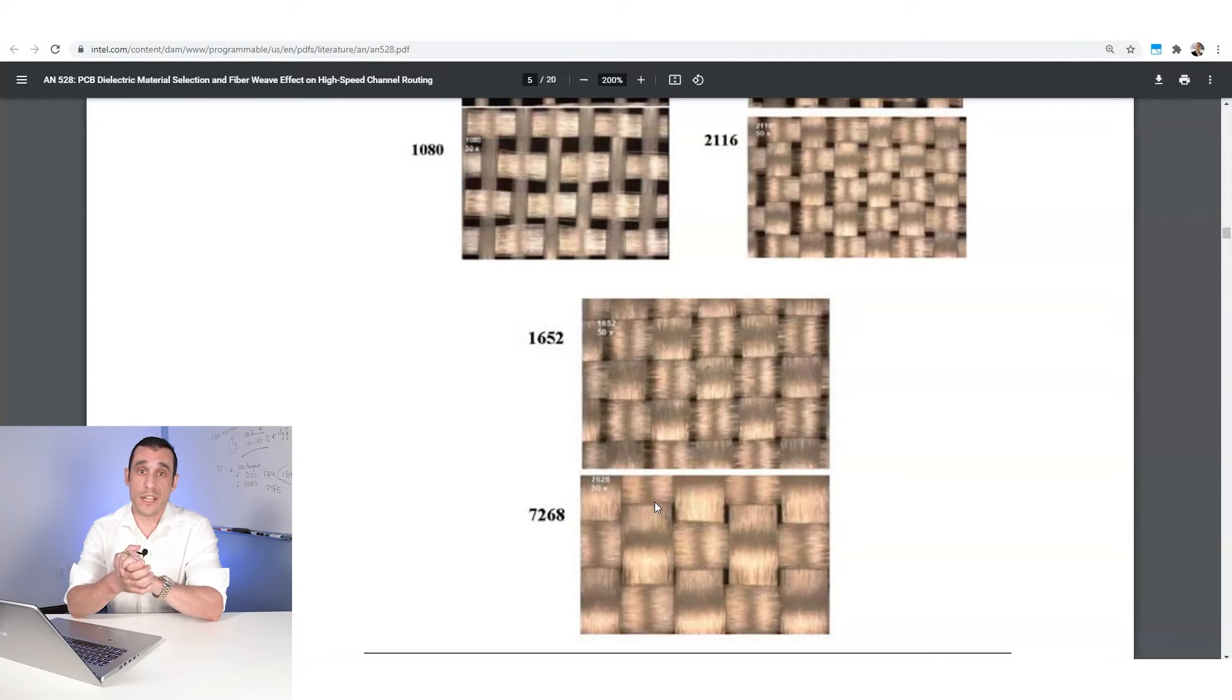So in general, this tighter weave is going to be much better, much more ideal selection for a high speed design or for a high frequency design. So something that's running in the gigahertz range, something that's running, if it's digital below five nanosecond rise time, in general, you want to go for a 7628 or similarly tight weaved type of laminate material. The looser weave stuff, you can get away with in lower speed designs. Lower speed logic is fine for that. Lower frequency analog is fine for that.